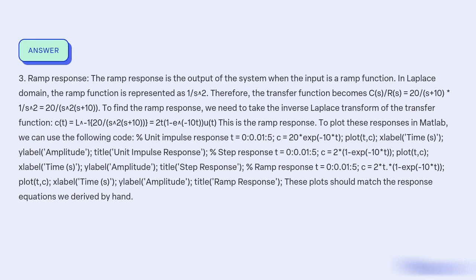Ramp response: The ramp response is the output of the system when the input is a ramp function. In the Laplace domain, the ramp function is represented as 1/S². Therefore, the transfer function becomes C(S)/R(S) = 20/(S+10) * 1/S² = 20/(S²*(S+10)). To find the ramp response, we take the inverse Laplace transform: c(t) = L⁻¹{20/(S²*(S+10))} = 2(t - e^(-10t)) * u(t). This is the ramp response.